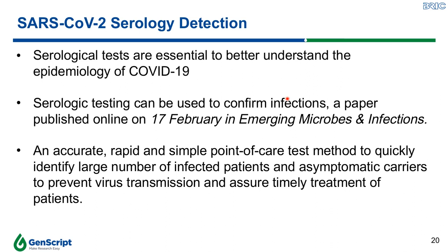Serology-based tests allow us to have a better understanding of the epidemiology of COVID-19. On 17th of February, an article published in Emerging Microbes and Infections proved the feasibility of serologic testing to confirm infection. The beauty of this test is it allows rapid identification of a large number of infected patients and asymptomatic cases in an accurate, rapid, and simple manner to prevent virus transmission and ensure timely treatment. This test is attractive due to its short detection time and ability to detect active immune response in the patient.